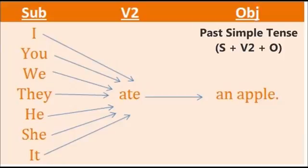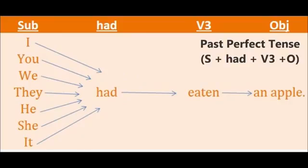The second tense in the past is past perfect tense. The structure is subject plus had plus V3 plus object. The helping verb used here is 'had', and it is used for all the subjects. The verb is V3: V1 eat, V2 ate, V3 eaten. Examples: I had eaten an apple, we had eaten an apple, she had eaten an apple, it had eaten an apple.